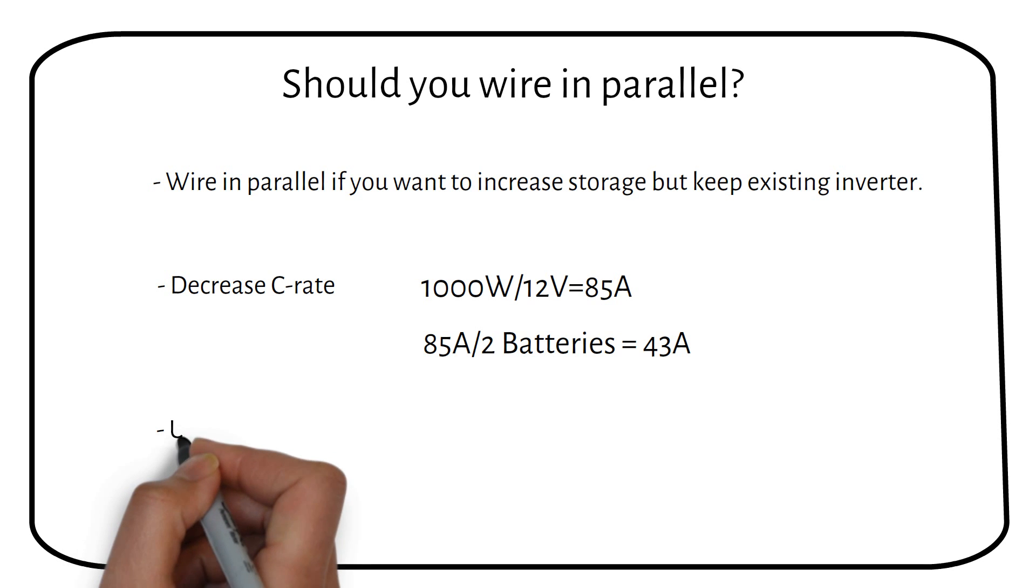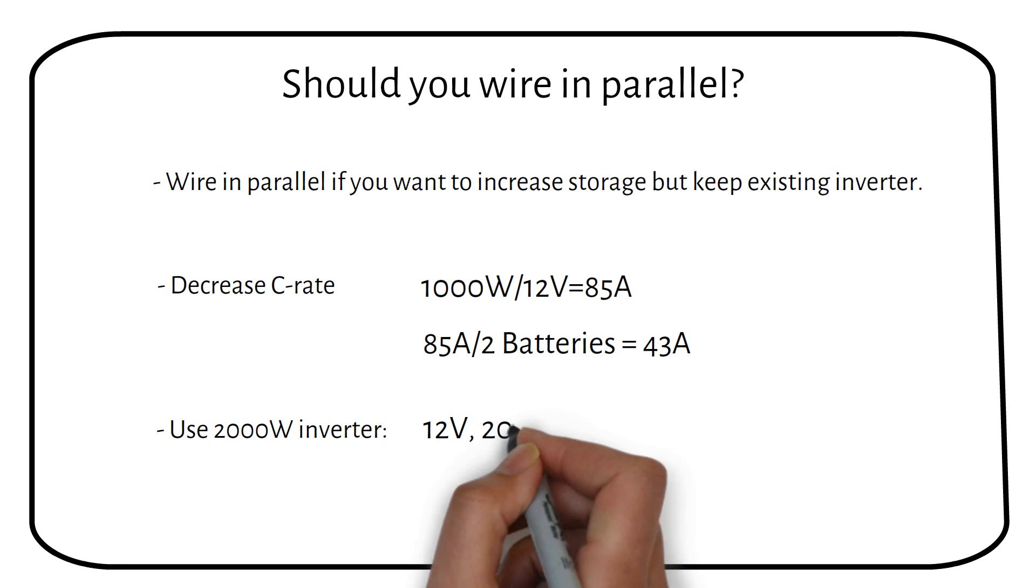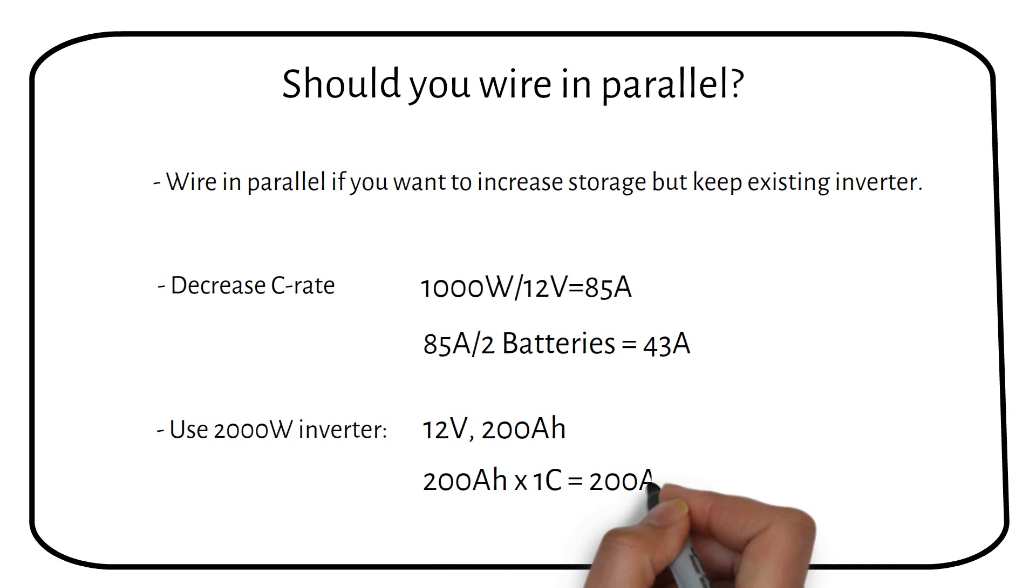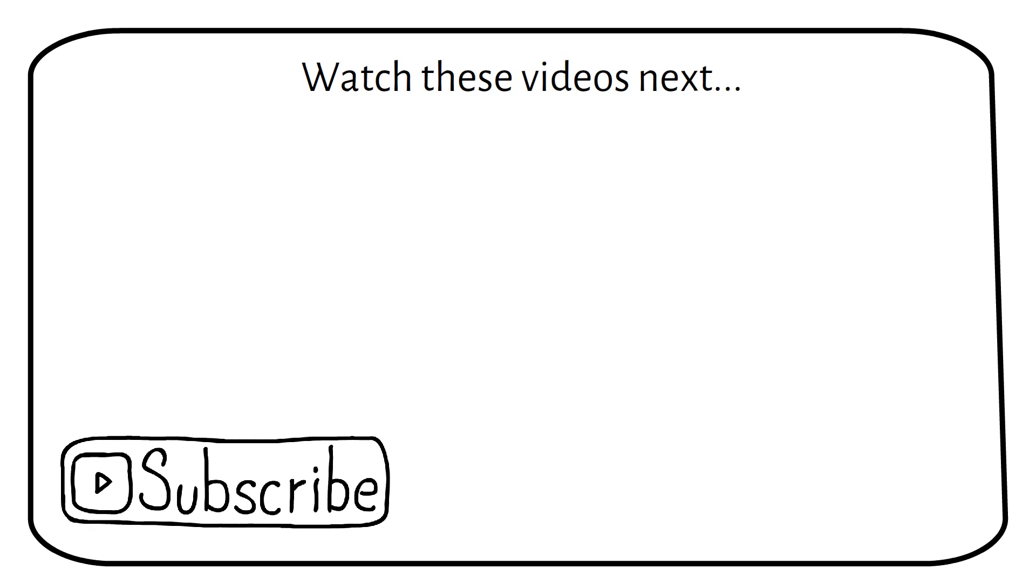To power a 2000W inverter on a 12V system with lithium batteries, you need at least two 12V 100Ah batteries in parallel. This becomes one big 12V 200Ah battery. Such a battery has a C-rate of 1C. Thus, you can draw a maximum of 200A, while the inverter will draw a maximum of 167A. This battery is correctly sized. Let me know your questions in the comments. Subscribe for more videos like this, and watch these videos next.